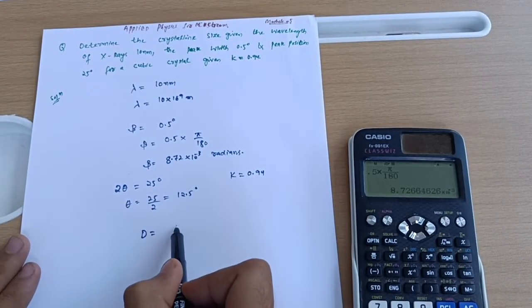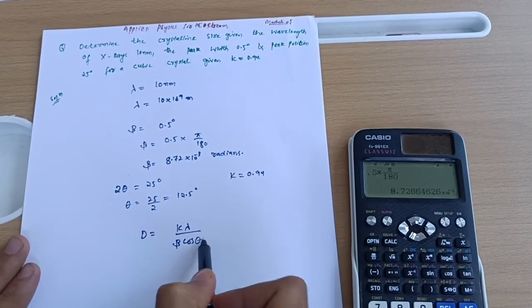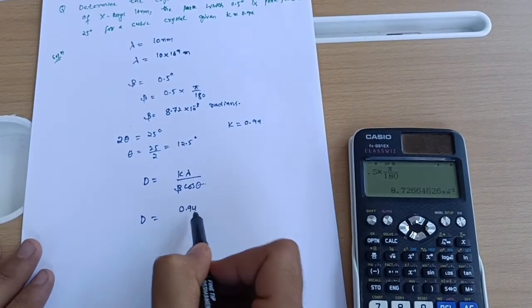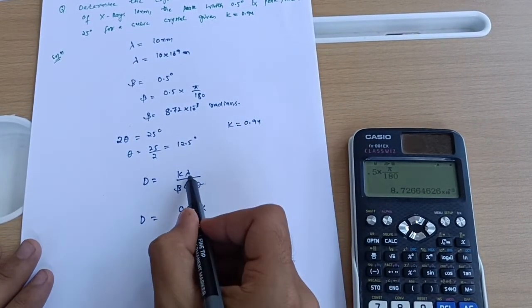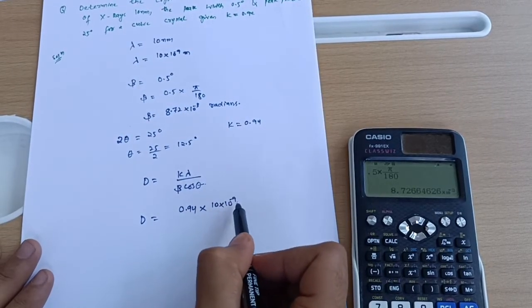D = K × λ / (β × cos θ). So D equals K - what is the K value? 0.94. Multiplied by lambda, which is 10 × 10^-9 meters.